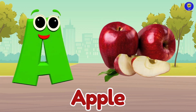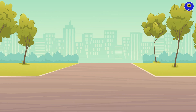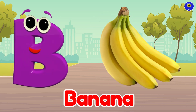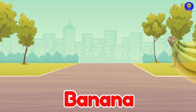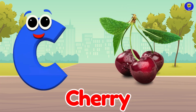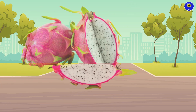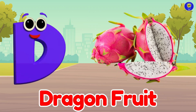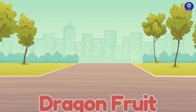A is for apple. A, a, apple. B is for banana. Buh, buh, banana. C is for cherry. Cuh, cuh, cherry. D is for dragon fruit. Duh, duh, dragon fruit.